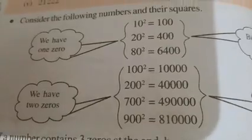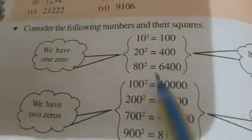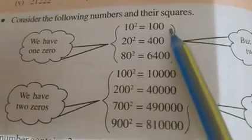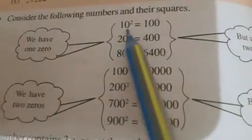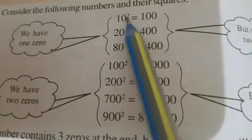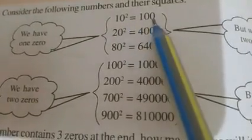See the next. In this table, 10 square is 100. When you are writing 10, there is 1 zero. When you are writing square, then there are 2 zeros. 20 square is 400. Number has 1 zero, square has 2 zeros. 80 square is 6,400. 80 has 1 zero. Number has 1 zero, then square has 2 zeros. Now, number has 2 zeros, then square has 1, 2, 3, 4 zeros.